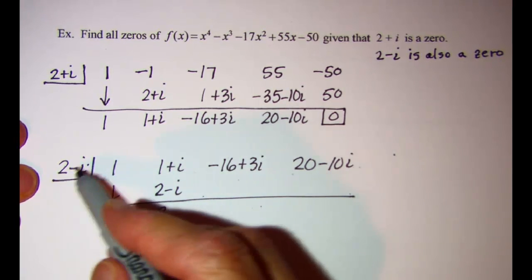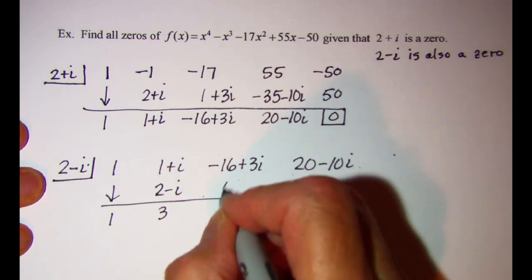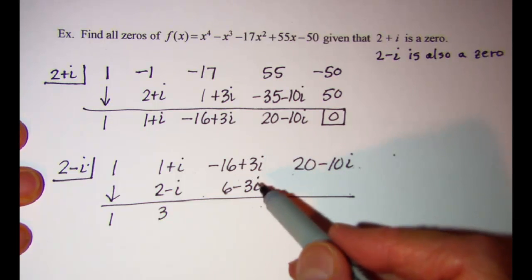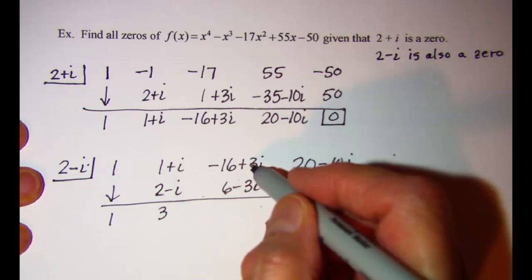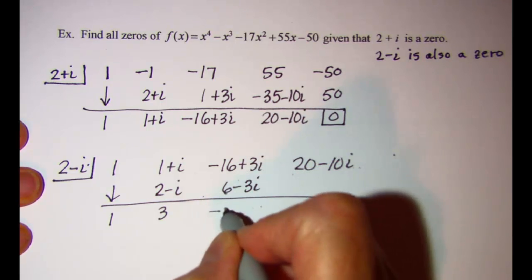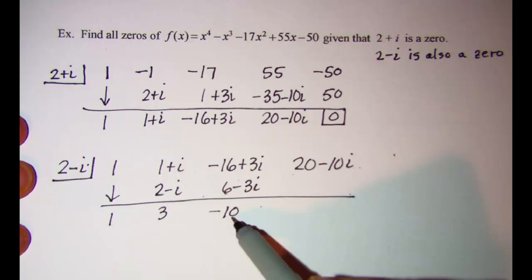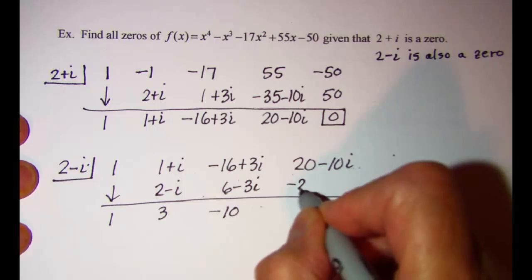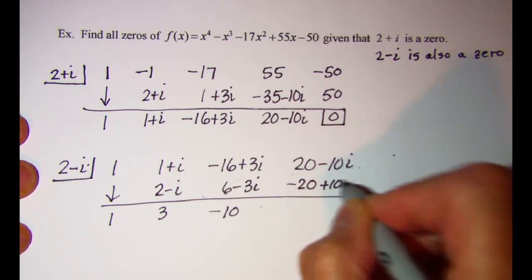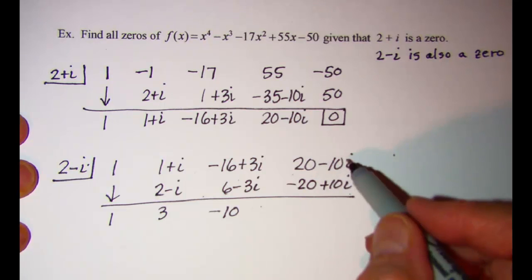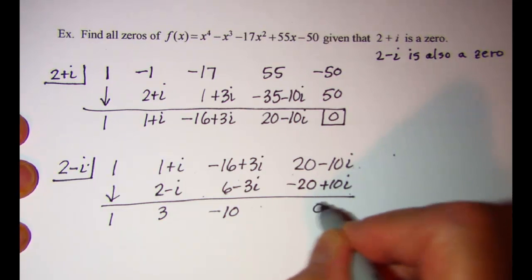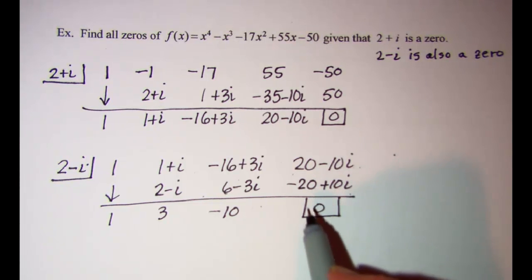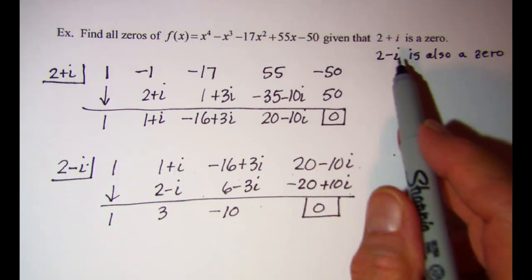3 multiplied by 2 - i is 6 - 3i. When I add these, the 3i and the -3i cancel, and I have just -10. And then multiplying -10 by 2 - i gives me -20 + 10i. And so again, we can see that these both cancel and I have a 0 remainder, which I knew had to happen because 2 - i is also a zero.